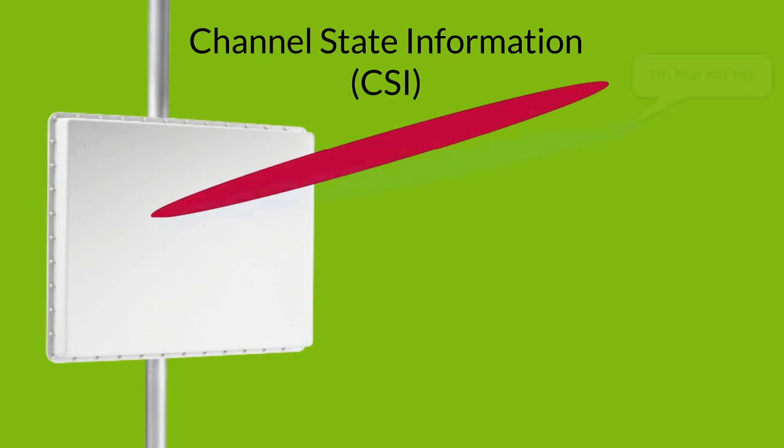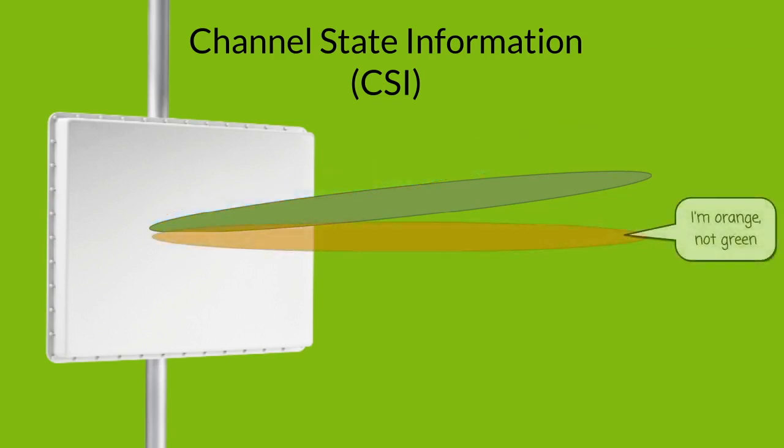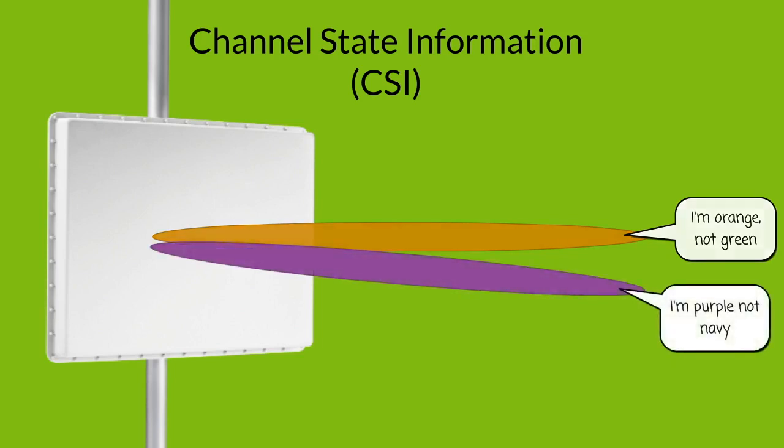This is where channel sounding comes in. The radios are always talking, but how does the base station know which subscriber is actually doing the talking? Channel state information, known as CSI, enables the base station to be able to distinguish between subscribers.